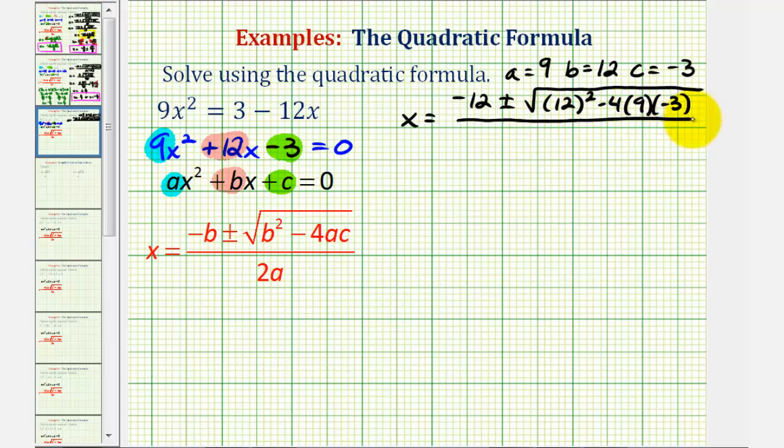All divided by two times a, or in this case, two times nine. Notice how for this first step, we just performed the substitution.